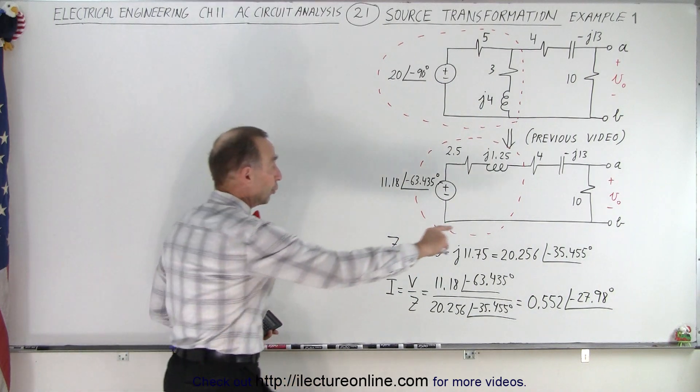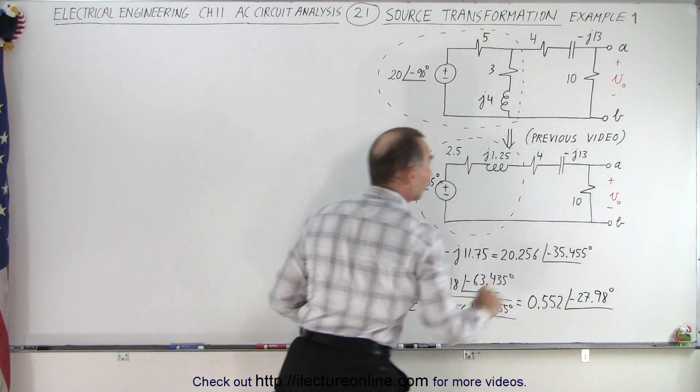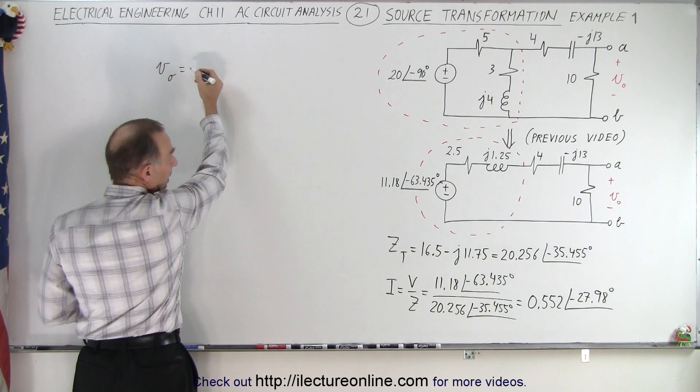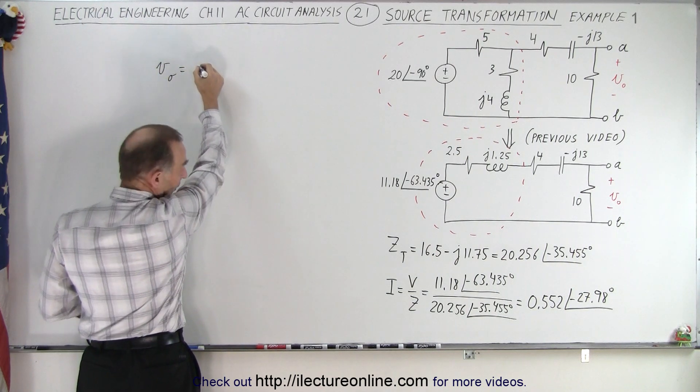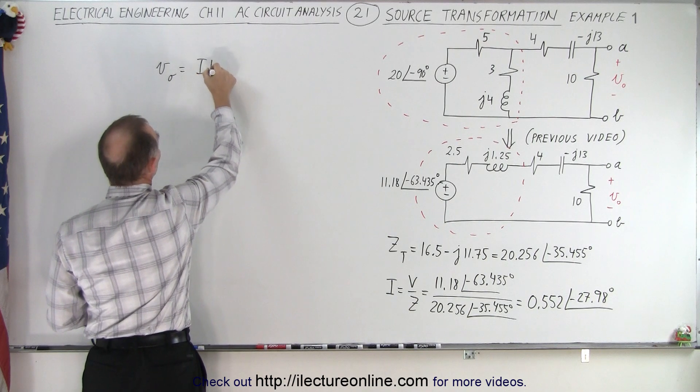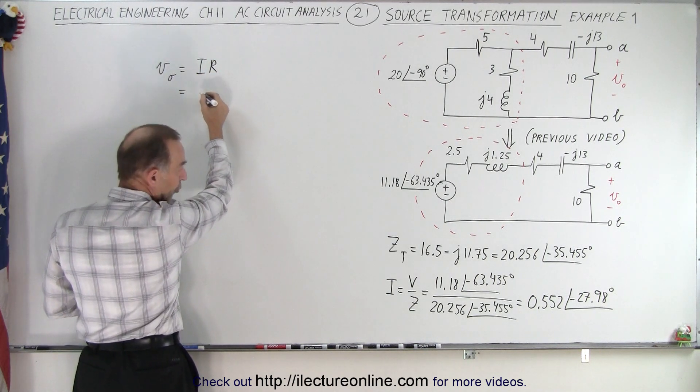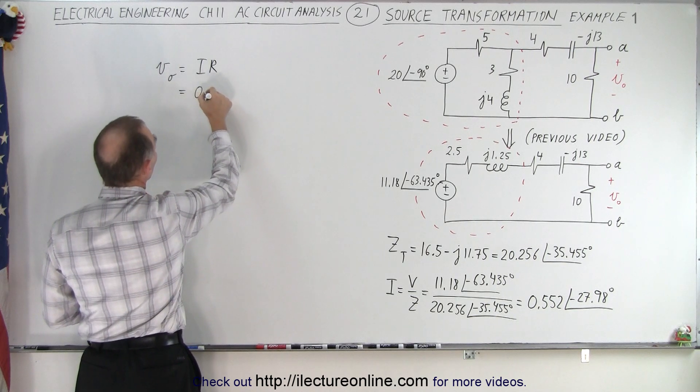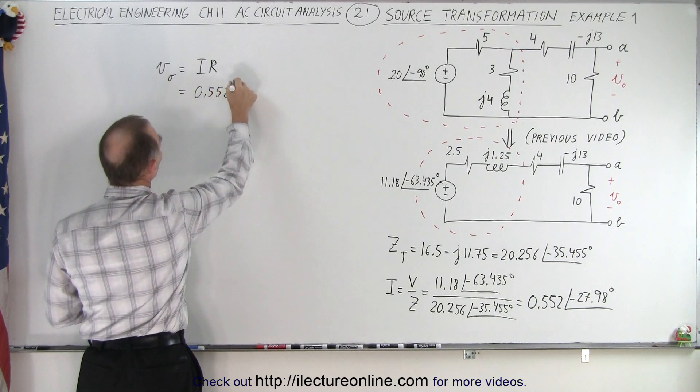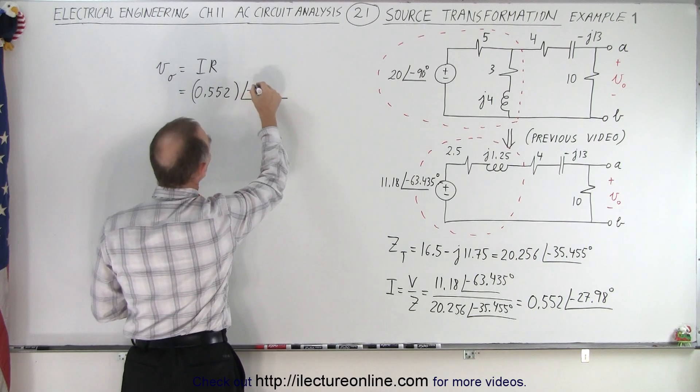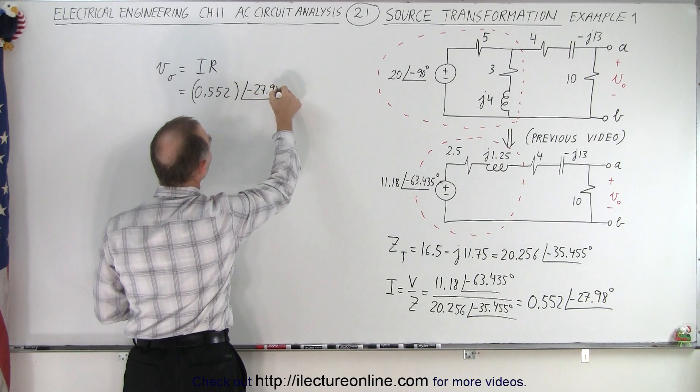And now that we have the current to the circuit, now to get the voltage drop across here. So, the voltage, in this case, would be equal to the current I times the resistance from A to B. So, in this case, that is equal to 0.552 with a phase angle of negative 27.98 degrees.